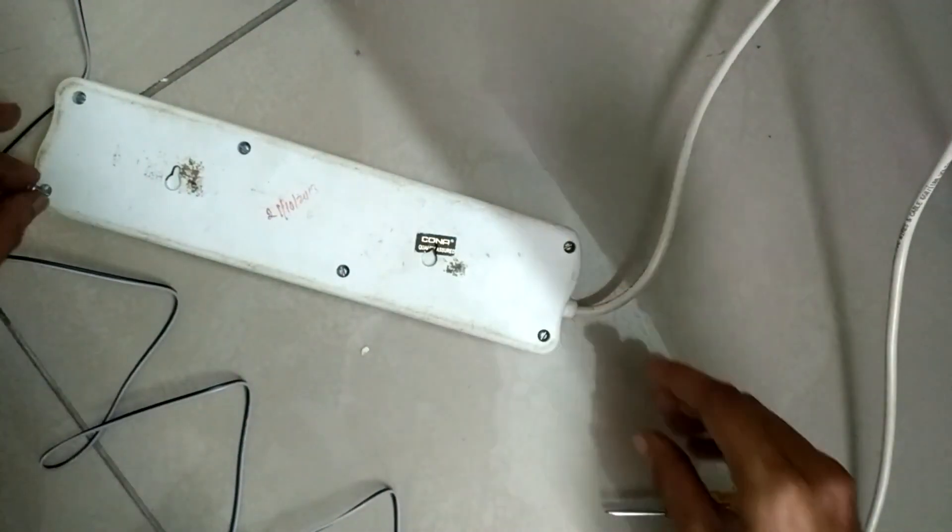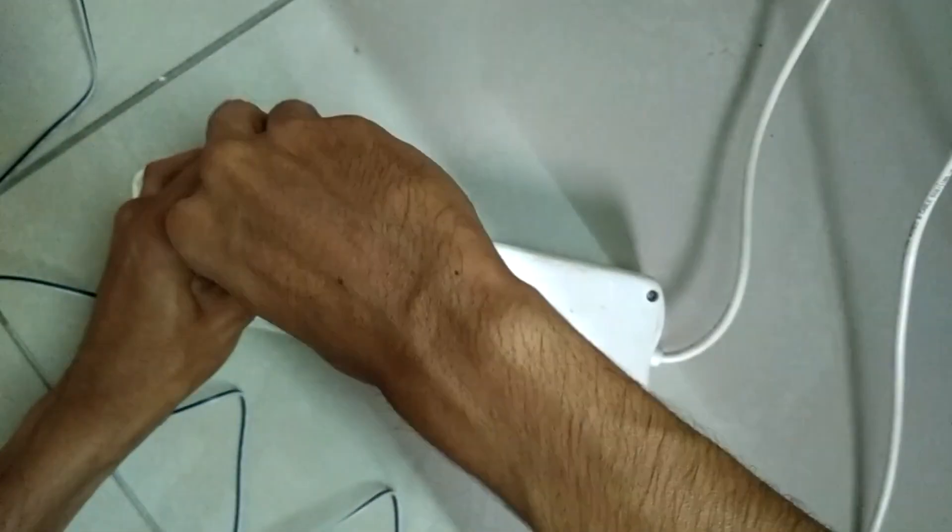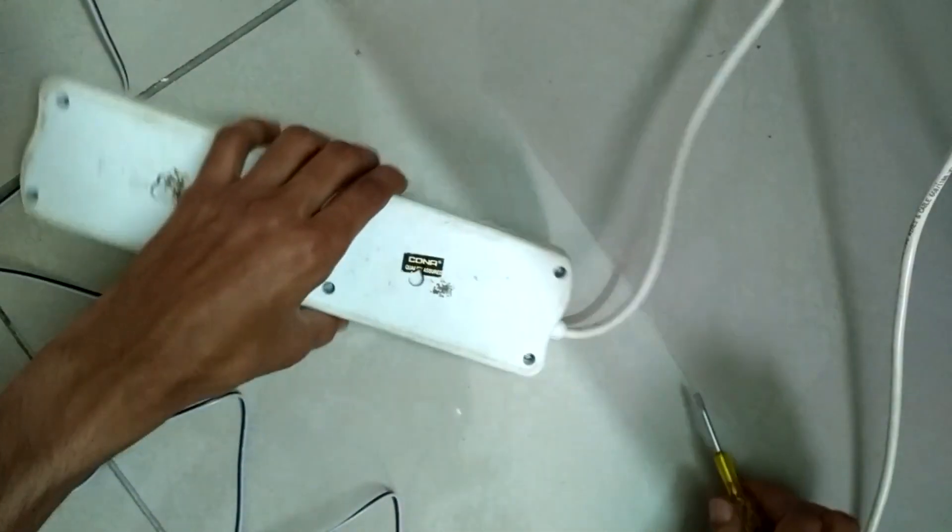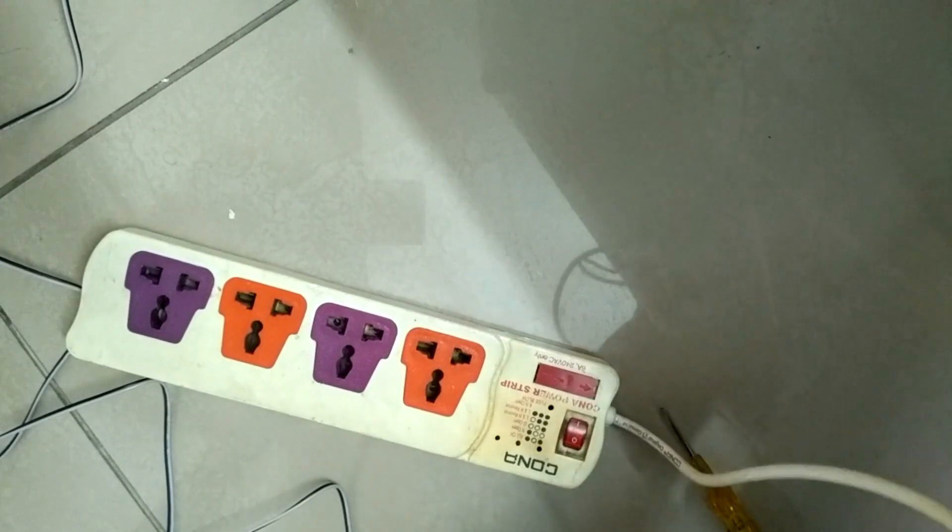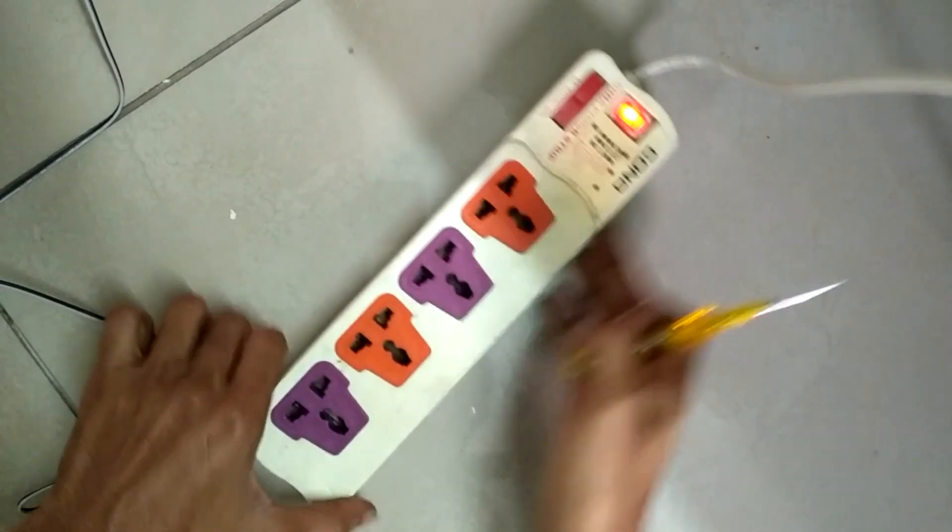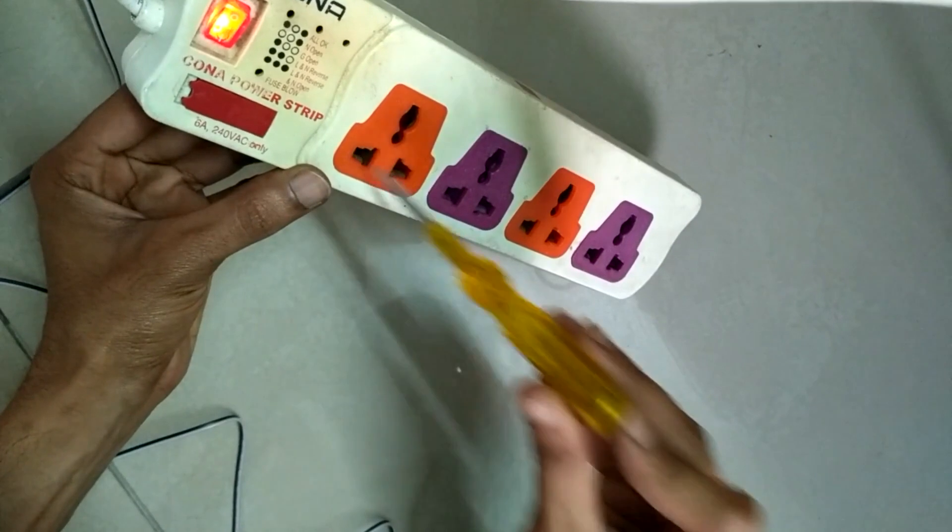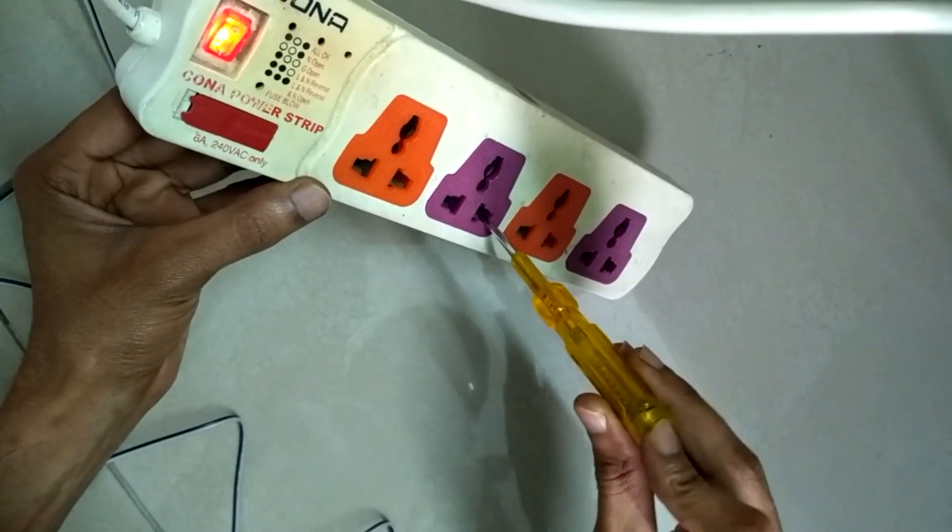Now close the back cover. Turn it, turn all the screws clockwise. Now finally check the process using the tester. Now the line comes towards right side. Left one is neutral, right one is line, top one is earth. And same to all the remaining sockets.